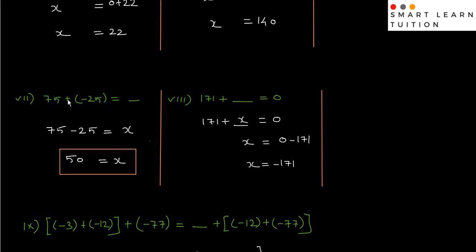First step: open the brackets. Plus into minus is minus. So 75 minus 25 — normal subtraction — 50 equals to x.